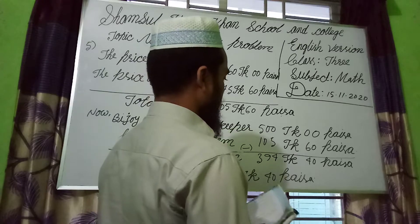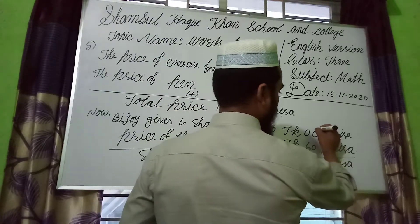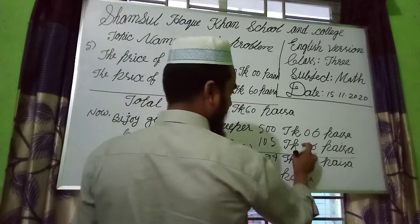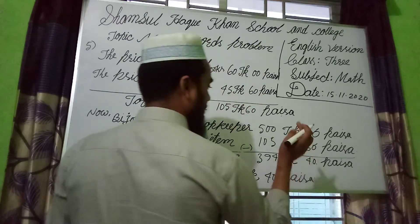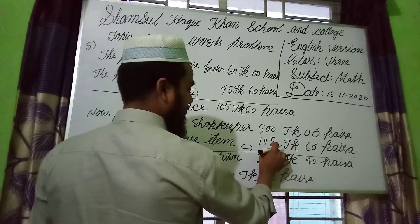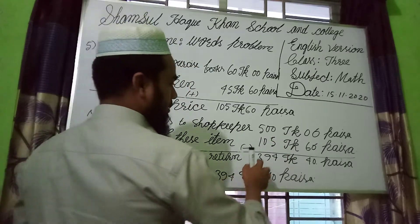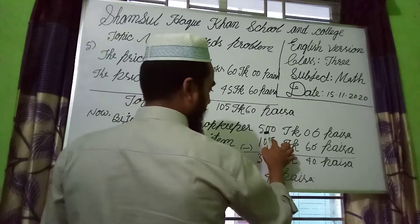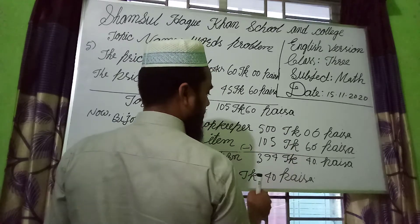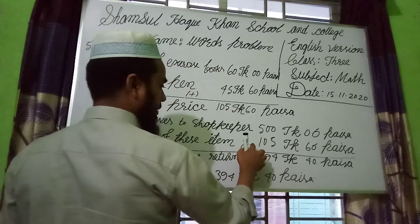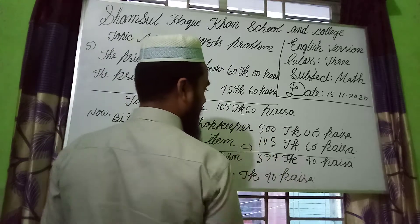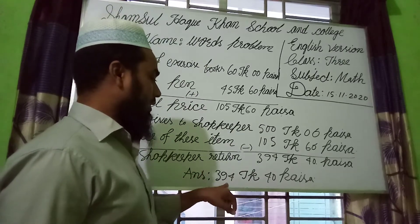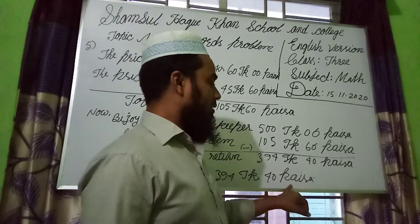Subtraction: 0 minus 0 is 0. 6 deducted from 10 is 4, carry 1. 5 plus 1 is 6, deducted from 10 is 4, carry 1. 1 deducted from 10 is 9, carry 1. 1 plus 1 is 2, deducted from 5 is 3. The shopkeeper returns 394 Taka 40 Paisa.